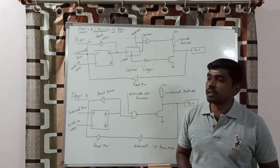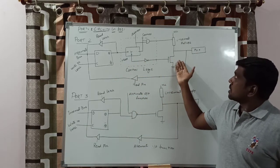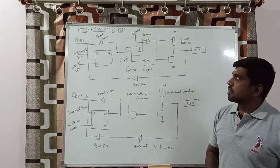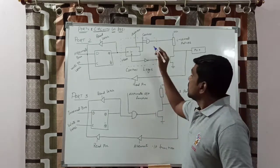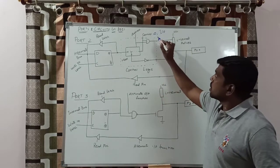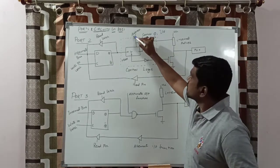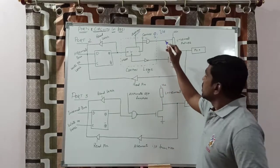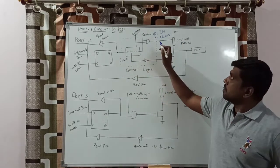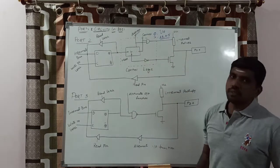This is a simple structure of port 2 and port 3. Port 2 consists of a D flip-flop, logic gates, a transistor, and internal pull-up resistors. Port 2 basically performs a dual function based on the control signal. When the control signal value is 0, this port acts as normal IO mode. When the control signal is 1, it performs the alternate function, which is getting the higher order address A8 to A15. When the microcontroller is accessing external memory, you need higher order address locations A8 to A15, and those can be obtained from port 2.